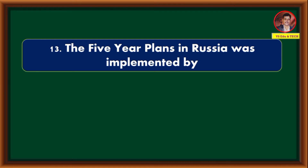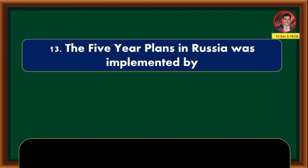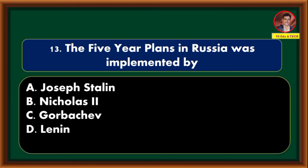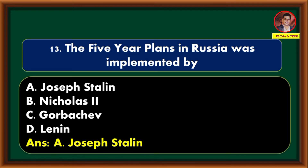The five-year plans in Russia were implemented by — Joseph Stalin, Nicholas II, Gorbachev, Lenin. Correct answer is option A: Joseph Stalin.